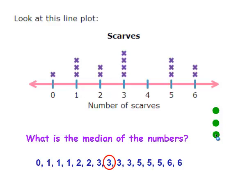What is the median of the numbers? Well, you pull them off: 0, there are 3 ones, 2 twos, 4 threes, 3 fives, and 2 sixes. Put those in order from least to greatest — they're already in order on this line plot. And the median is the number that's in the middle. There's only one number in the middle and that's 3.